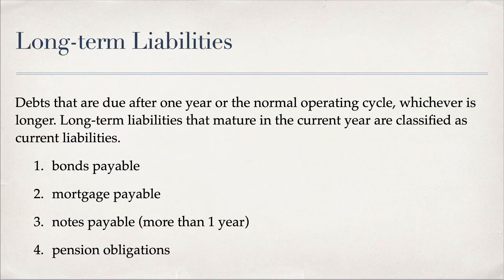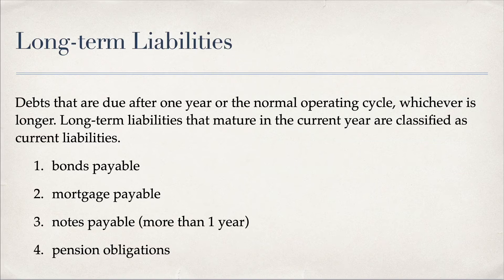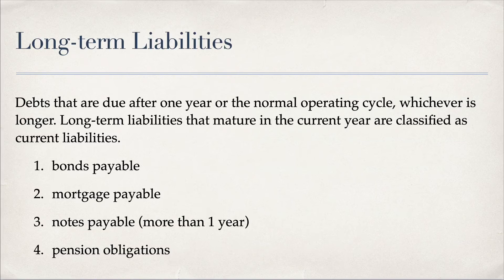Long-term liabilities are due in more than one year — exactly one year would still be current. For example, bonds payable with a 30-year term is a long-term liability for 29 years, but in that final year when it becomes due within one year, it becomes a current liability. Other examples of long-term liabilities include mortgage payable, notes payable due more than one year out, and pension obligations.